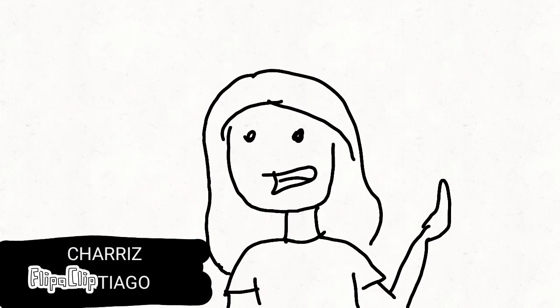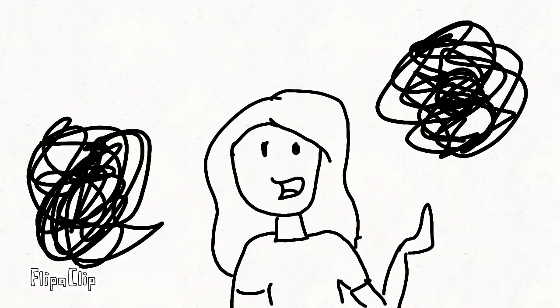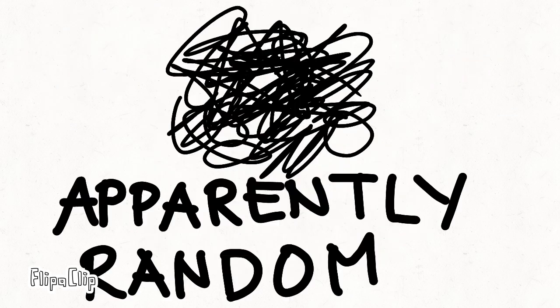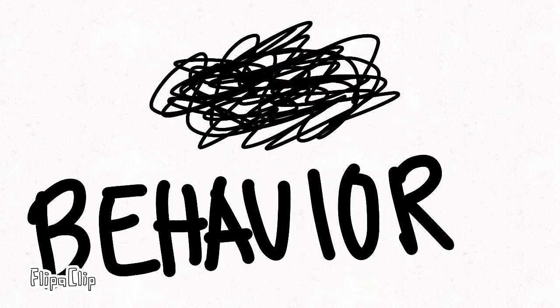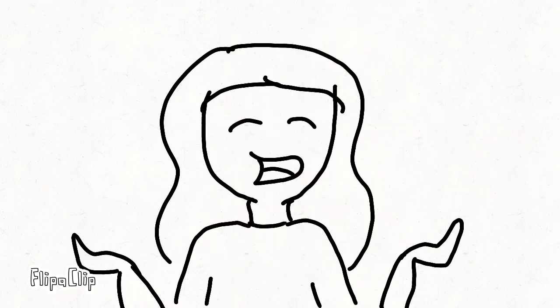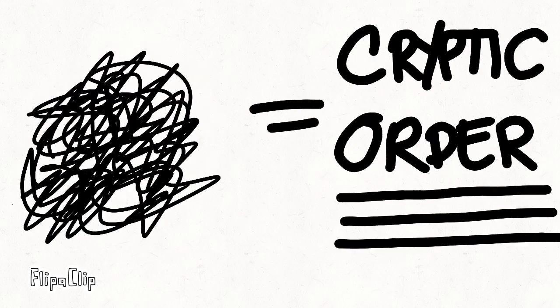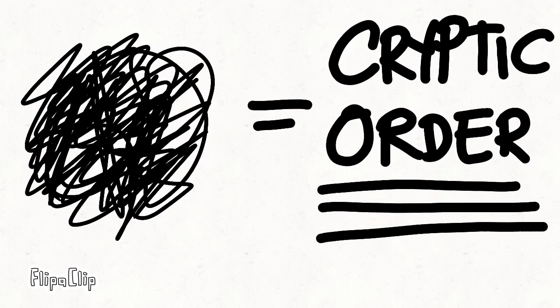On page 123, Stewart defines chaos as something that isn't random, but it is apparently random behavior resulting from rules. Therefore, chaos is a cryptic form of order.